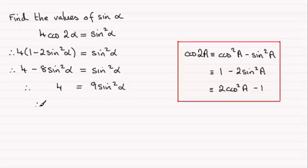And if I divide both sides by 9, I end up with sine squared alpha equals 4 ninths. And then if I take the square root of both sides, we end up with sine alpha equaling the square root of 4 ninths, which will be plus or minus, don't forget that.